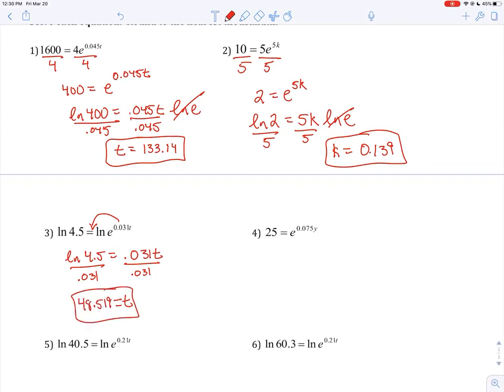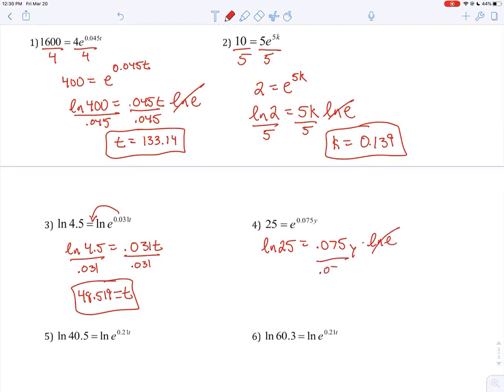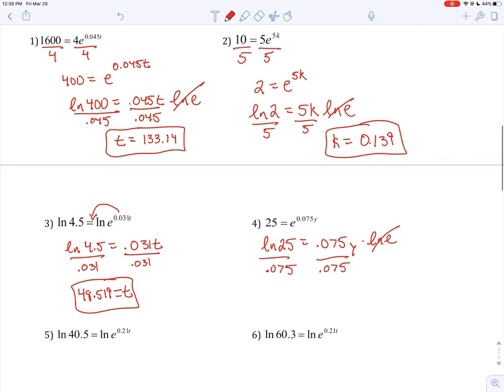With our second one, the E is isolated, but exponent is what we don't know. So we need to take the natural log of each side. Natural log of 25 is 0.075Y times the natural log of E. That goes away. We divide by the 0.075 on each side, and we get to Y equals 42.918.